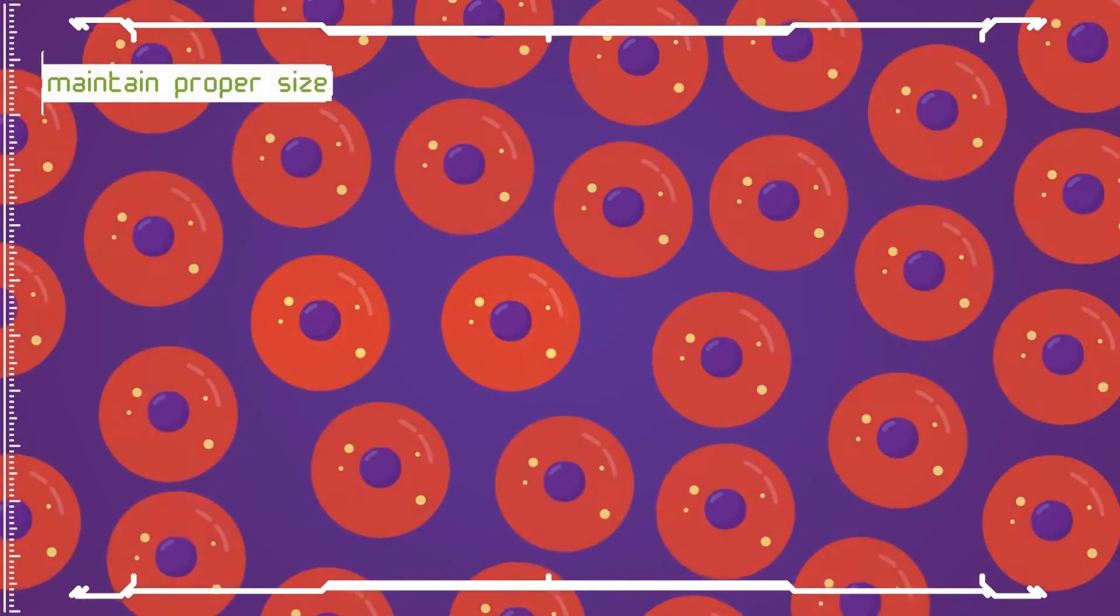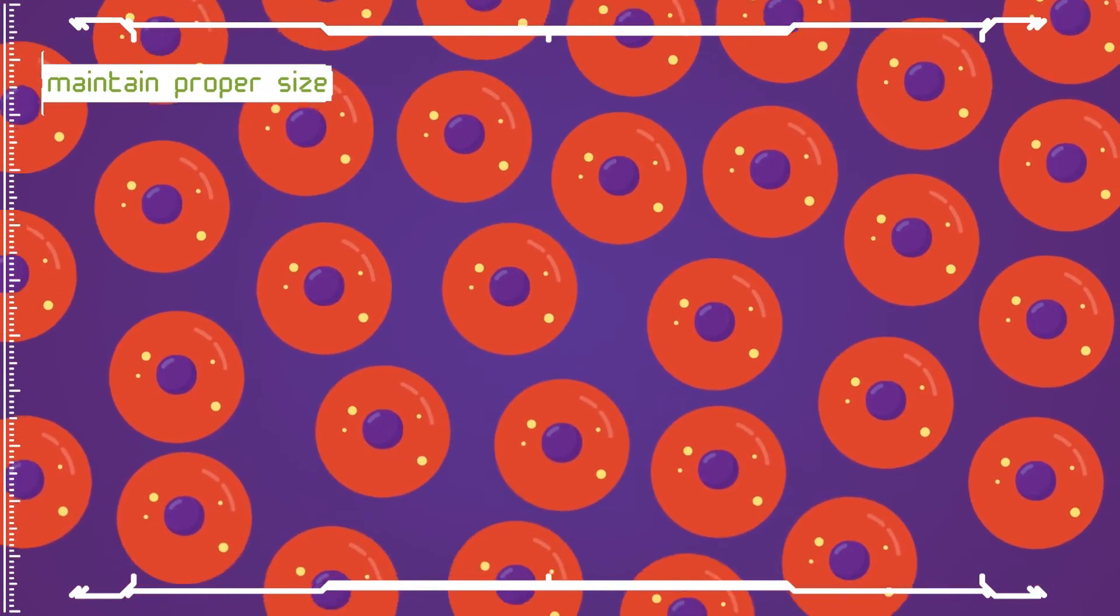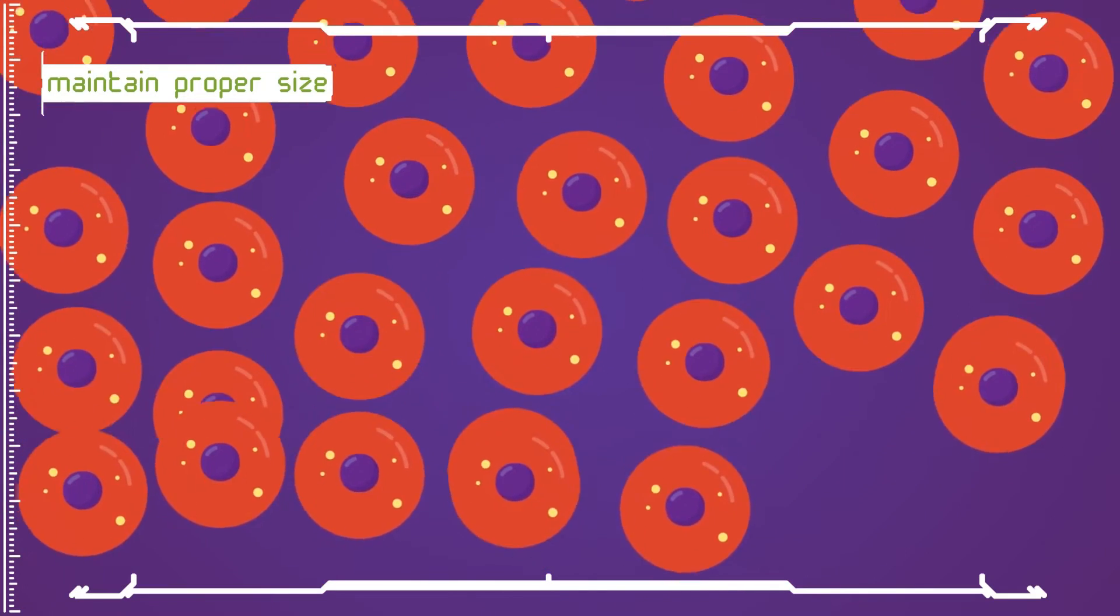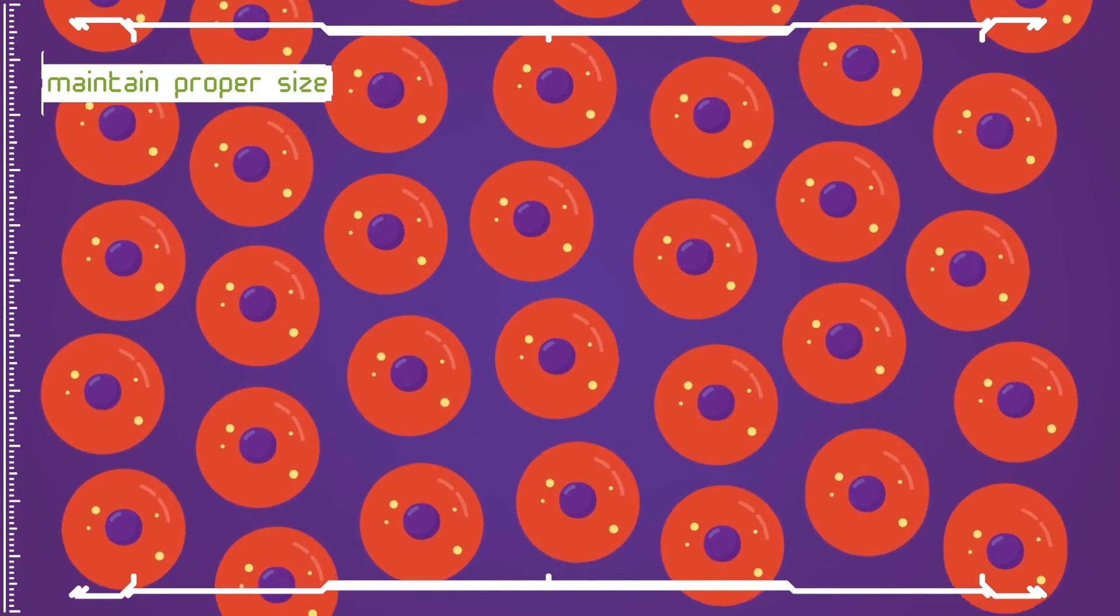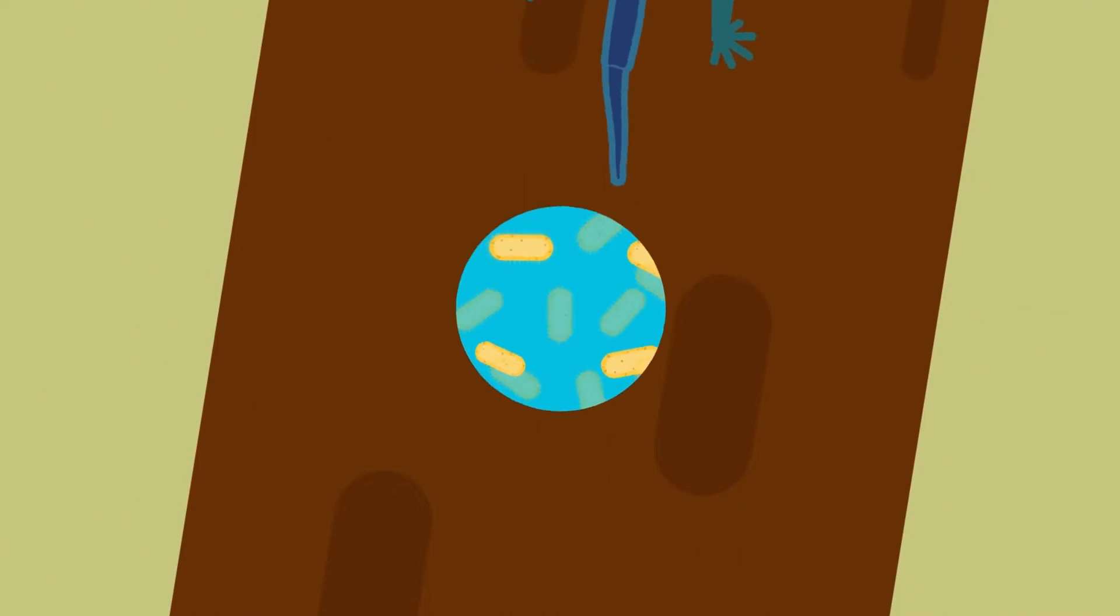Mitosis helps in restoring wear and tear in body tissues, replacement of damaged or lost parts, healing of wounds, and regeneration of detached parts as in the tail of lizards. It is a method of multiplication in unicellular organisms.